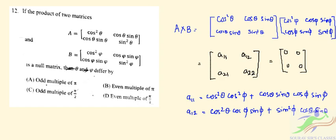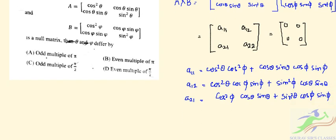We will have a21, which is cos²φ · cosθ sinθ + sin²θ · cosφ sinφ. And finally the last element a22 will be cosθ sinθ · cosφ sinφ + sin²φ.